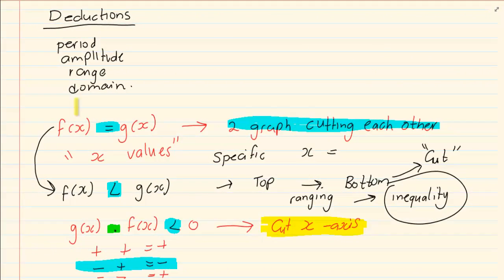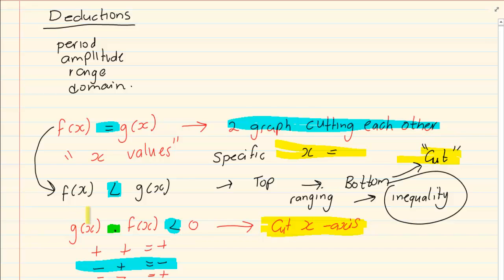So the three types of deductions we get are: when it's an equal to, which gives specific x values; when one graph is greater than another, which is based on where they cut relative to each other; and when one times another is less than or equal to zero, that is when they cut the x-axis. Thank you for watching.